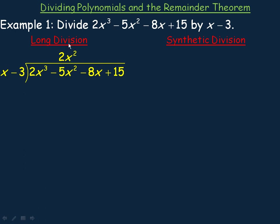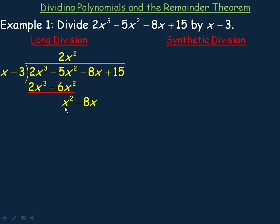Now take that 2x² and multiply by x minus 3: 2x² times x is 2x³, and 2x² times negative 3 is minus 6x². We subtract — 2x³ minus 2x³ is 0. Then negative 5x² take away negative 6x² is the same as adding 6x², giving x². Bring the negative 8x down. Now divide x into x²: x² divided by x is x. Write that x above the negative 8x.